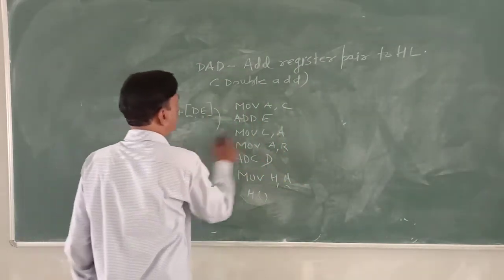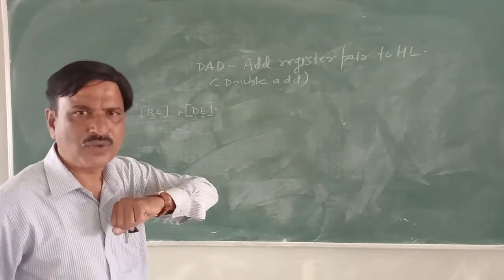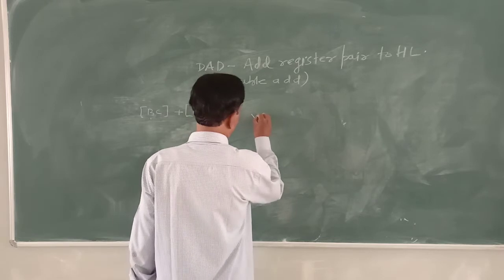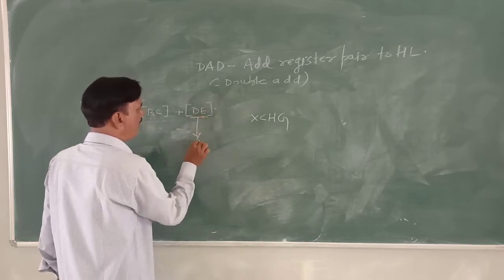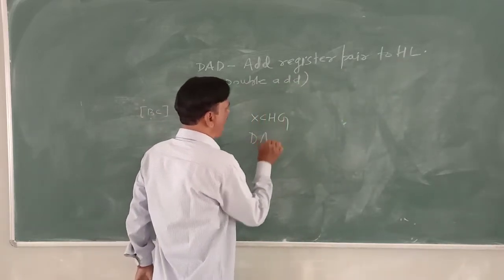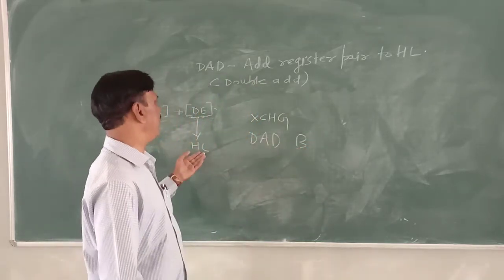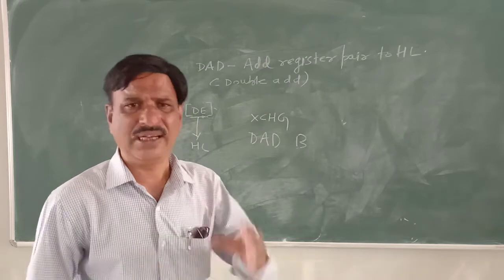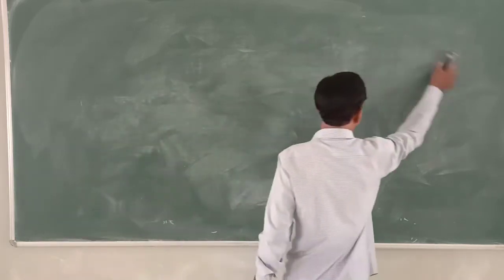Now instead of all that, we can use DAD. To add the contents of BC and DE using DAD, remember the instruction XCHG to exchange HL with DE. You can use XCHG so that DE content is now in HL. Then DAD D — double add the contents of DE — adds the content of the register pair with HL and stores the result in HL. So DAD instruction is used for performing 16-bit addition. This was the instruction DAD.